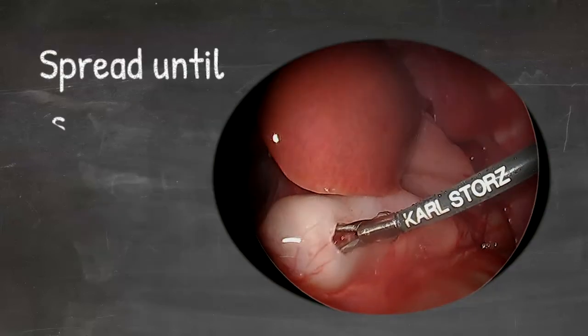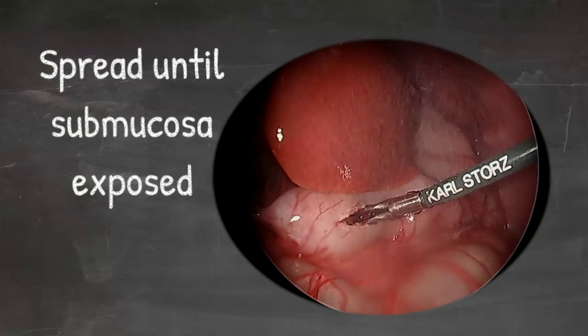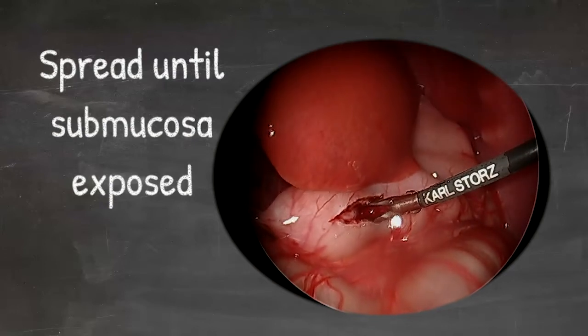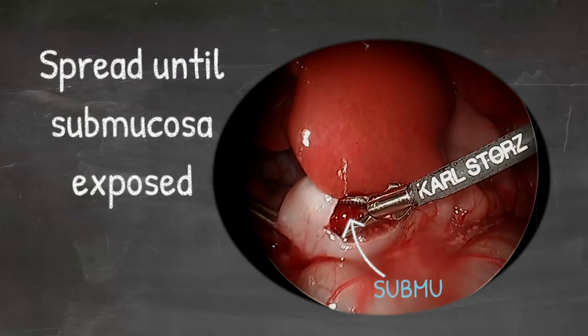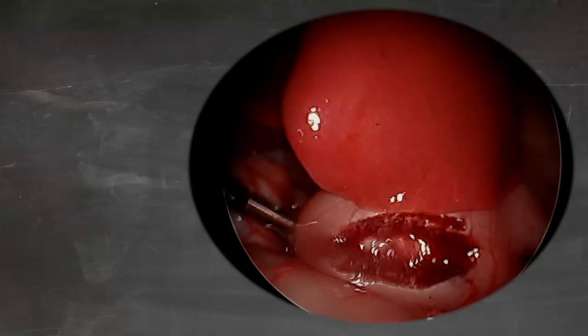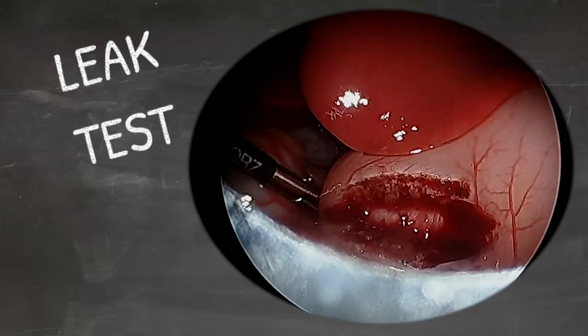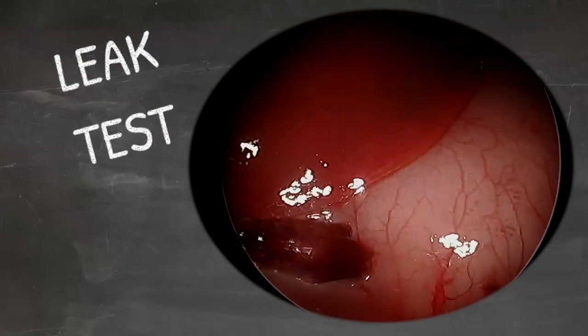After the incision, you use the pyloric spreader to extend the myotomy down to the submucosa. This should be done gently with multiple spreads. It is important to identify a mucosal perforation right away. Not everyone does a leak test, but is usually done by insufflating some air into the stomach, although this is not very reliable.